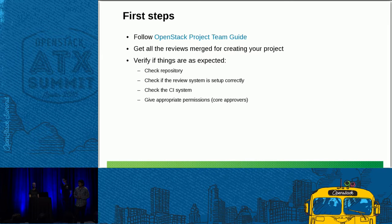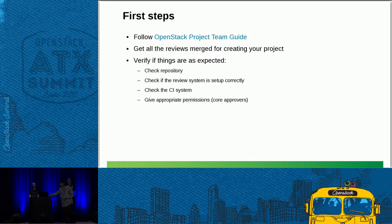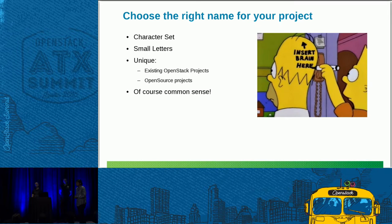There is good documentation on how to set up your project, covering the history, mission statement, and the Four Opens. The most important thing is to get your patches reviewed and merged. If it's a Big Tent project, you need your patch in the governance repository merged first, and the rest in infra and other places will automatically follow. This may require significant discussion depending on how easy it is to convince the Technical Committee. You'll also need to choose the right name for your project — the rename from Quantum to Neutron was difficult for the community and caused confusion.